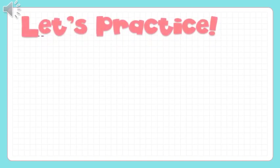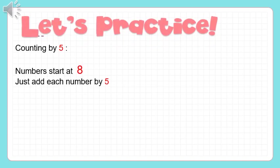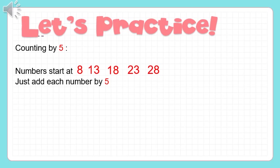Let's practice counting by five, with numbers starting at eight. We are just going to add each number by five. Eight plus five is thirteen, thirteen plus five is eighteen, eighteen plus five is twenty-three, and twenty-three plus five is twenty-eight. So the numbers are eight, thirteen, eighteen, twenty-three, and twenty-eight.